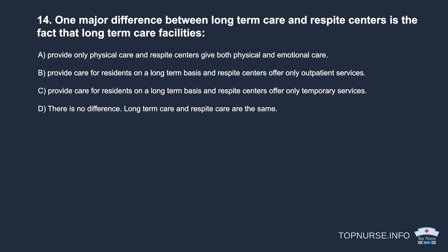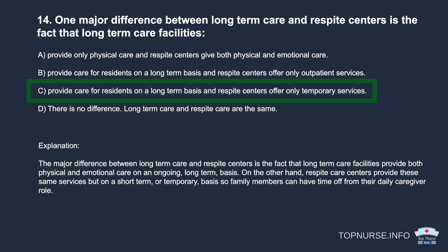Question 14: One major difference between long-term care and respite centers is that long-term care facilities: a. Provide only physical care while respite centers give both physical and emotional care. b. Provide care on a long-term basis while respite centers offer only outpatient services. c. Provide care on a long-term basis while respite centers offer only temporary services. d. There is no difference. Correct answer: c. Long-term care provides ongoing physical and emotional care, while respite care offers these services on a short-term basis so family members can have time off from their caregiver role.